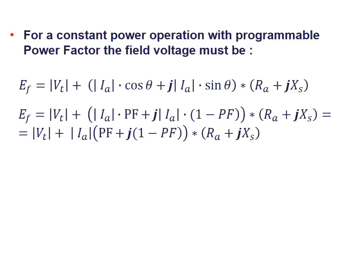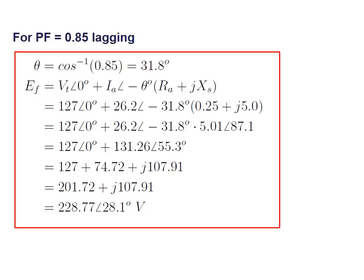From this general equation, we can define the algebra required for each case. For power factor 0.85 lagging, the angle is the inverse cosine of 0.85. Substituting back into the equation gives EF. The solutions have already been provided to you. The field voltage for 0.85 lagging is 228.77 volts at phase 28.1 degrees.